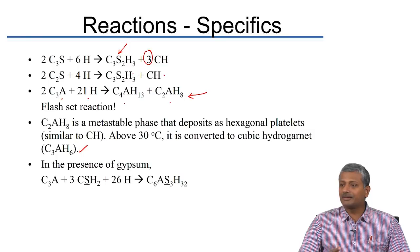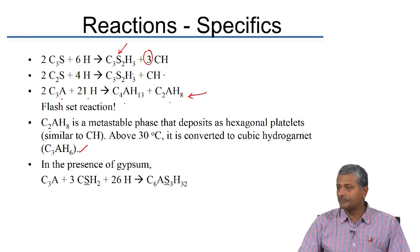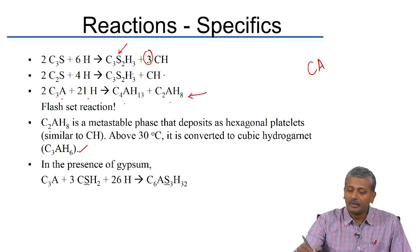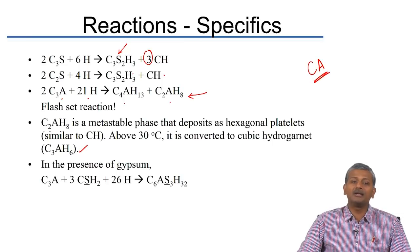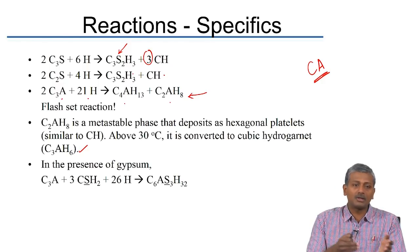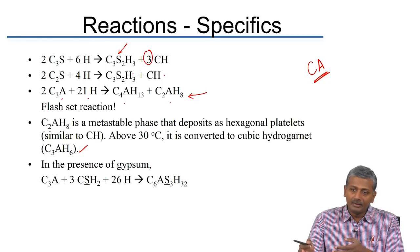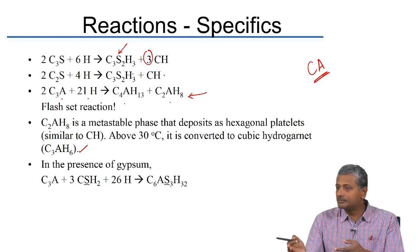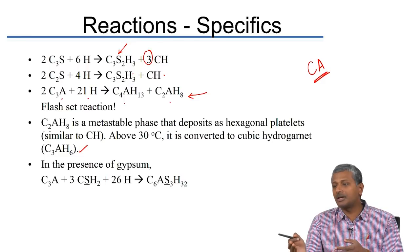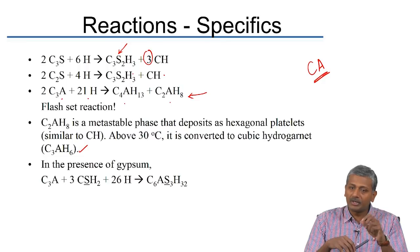High alumina cement (HAC), also called calcium aluminate cement, has calcium aluminate (CA) as its primary compound. Unlike ordinary Portland cement made from limestone and clay, calcium aluminate cement is produced from a mixture of limestone and bauxite as the alumina source.